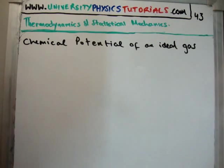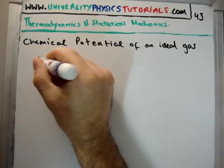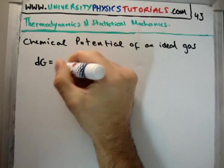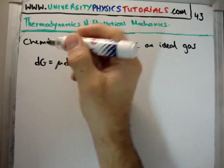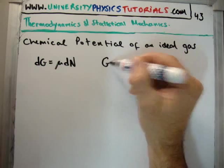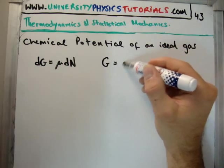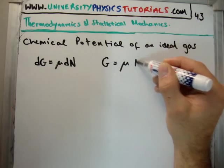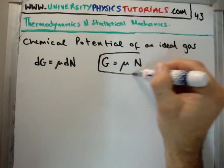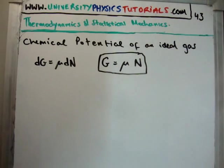Just a bit of revision to include video number 42. What we saw was that dG is equal to μ dN. So of course when we integrate that we find that the total Gibbs free energy is the chemical potential times the number of particles. That's why we said that the Gibbs free energy per particle is the chemical potential.